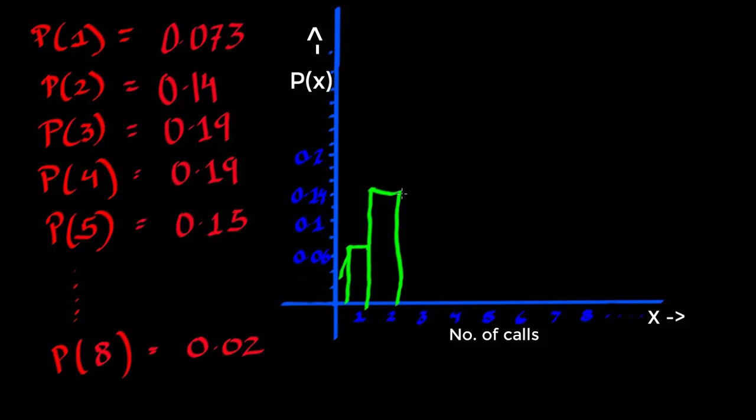Then for four calls, 0.19 again. Then 0.15, which will be somewhere here.